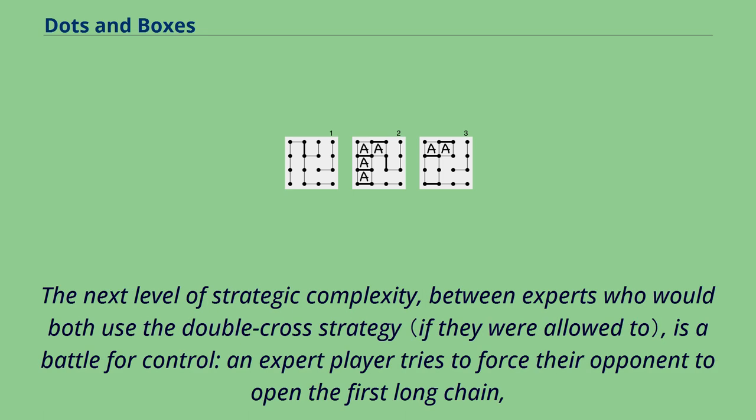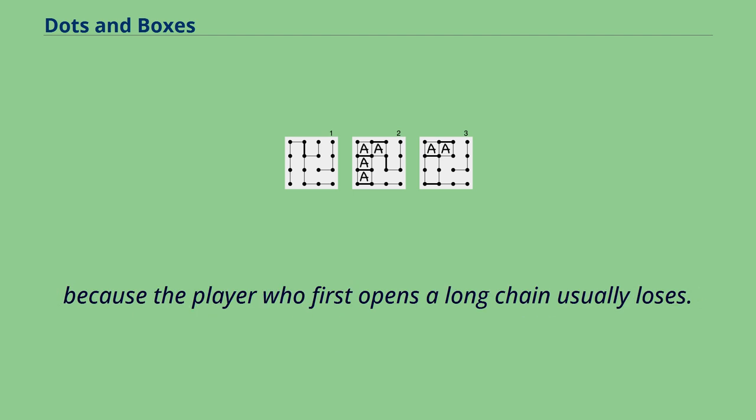The next level of strategic complexity, between experts who would both use the double-cross strategy, is a battle for control. An expert player tries to force their opponent to open the first long chain, because the player who first opens a long chain usually loses.